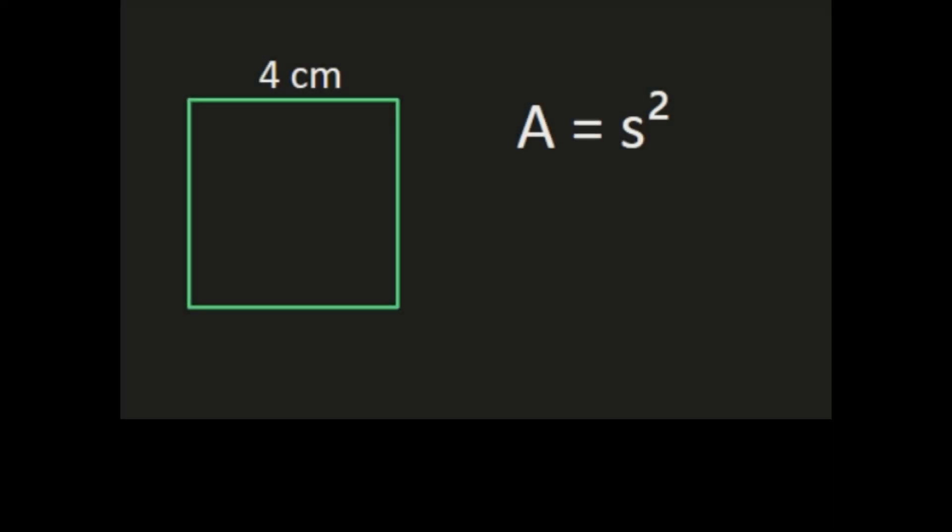In this example we have a square with side length of 4. And we're going to use our formula area equals s squared to find the area of our square. Our side is length 4, so we're going to take the 4 and substitute it for s. So we'll have area equals 4 squared.